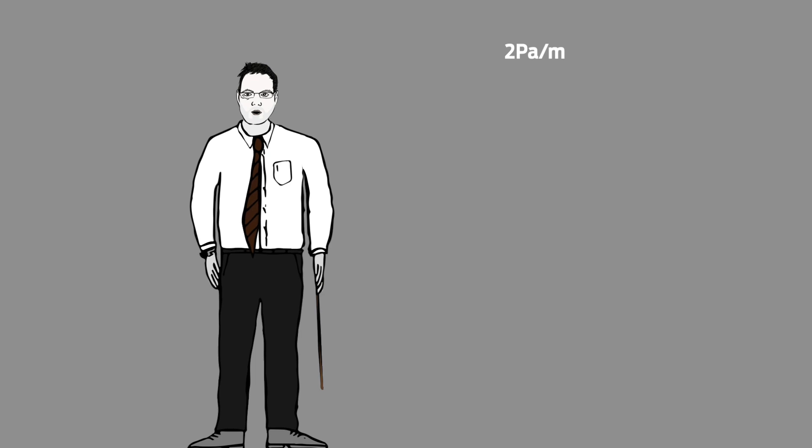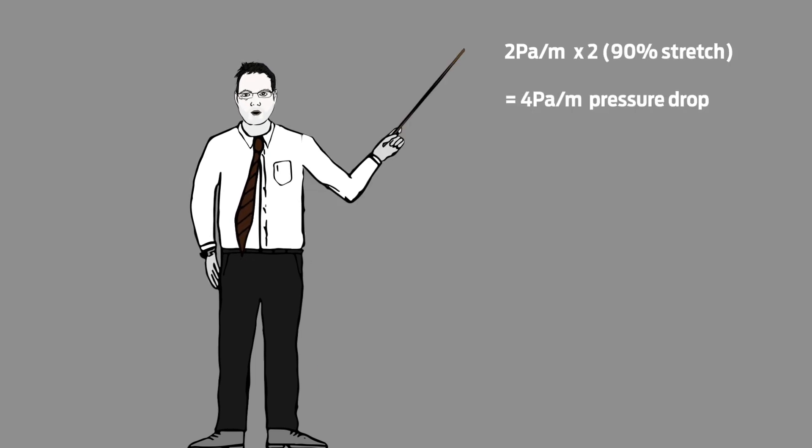If we now multiply the ducting pressure drop by 2, this will give us 4 Pa per metre, which is well above the 2.45 we just worked out. In this case, it won't work to the flow required, so what are your options?